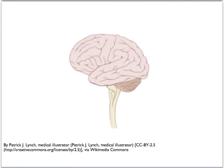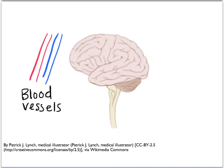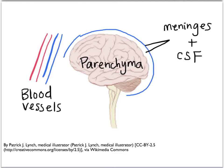We will further classify the inside-the-brain reasons based on the structures. The different structures of the brain include blood vessels — both arteries and veins — the brain parenchyma itself, and what surrounds the brain: the meninges and CSF.